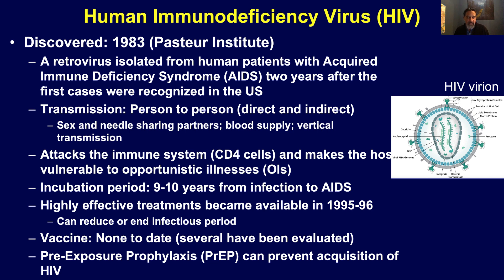There is no vaccine — there have been several attempts to develop an effective vaccine, but none have been successful to date. Most recently, there is a preventive tool called pre-exposure prophylaxis, or PrEP, which is a daily pill that people at high risk for HIV can take if they're HIV negative to prevent acquisition of HIV infection.